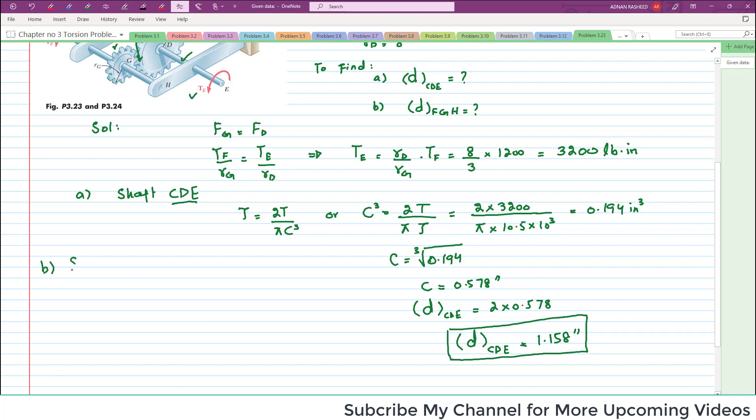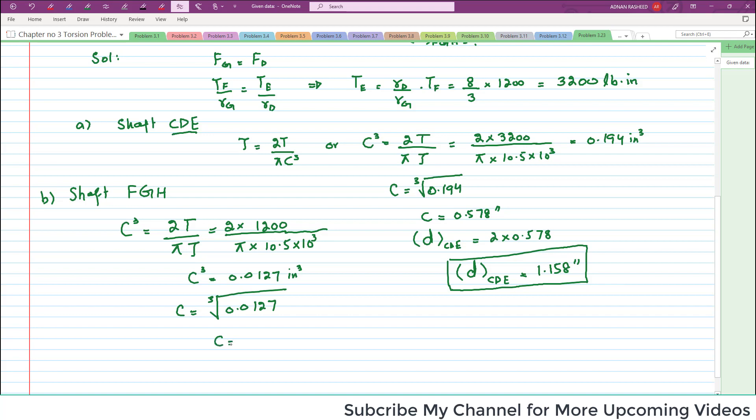Now we will move toward shaft FGH. Again I will write the formula: C cubed equals 2T over pi times shear stress. Now 2 multiplied by torque in FGH which is torque at F, and that was 1200, divide by pi into shear stress which is again 10.5 times 10 to power 3. So this C cubed will be equal to 0.0127 inch cubed. If you take the cubic root of 0.0127 that will equal C. When you calculate this value, this radius is 0.417 inch.